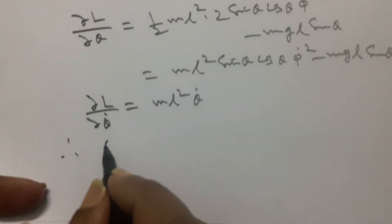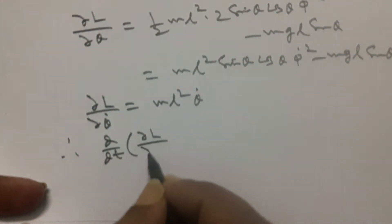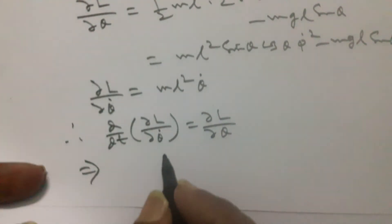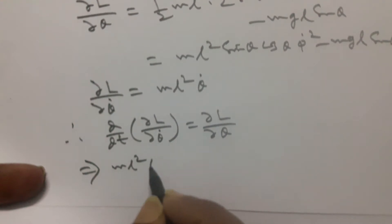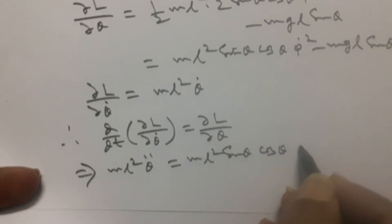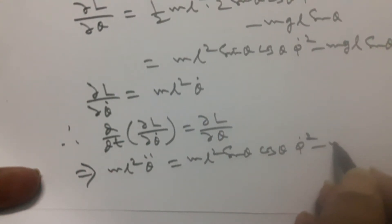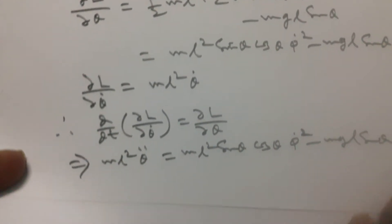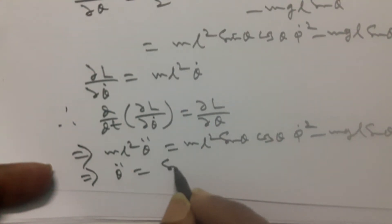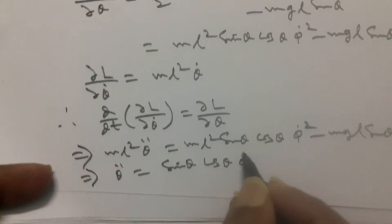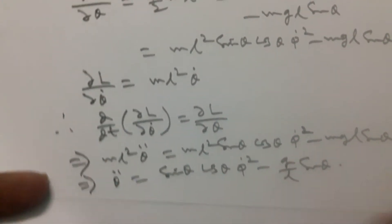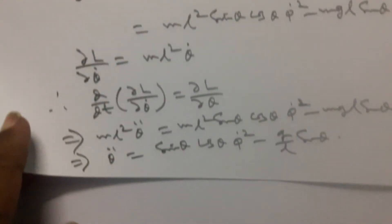Using the Lagrangian equation, d/dt of (∂L/∂θ̇) equals ∂L/∂θ. So mL squared theta-double-dot equals mL squared sine theta cos theta times phi-dot squared minus mgl sine theta, which implies theta-double-dot equals sine theta cos theta times phi-dot squared minus (g/L) sine theta.